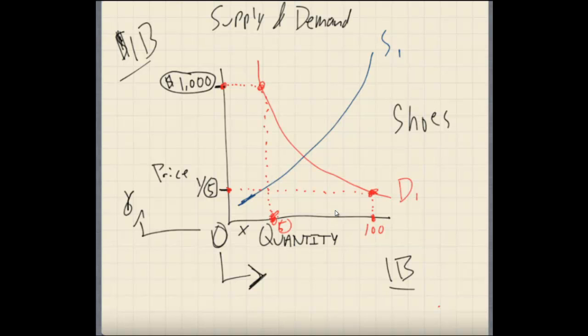Now, there's some exceptions we're going to talk about later, but as a rule of thumb, the law of demand is that the higher the price, the lower that the buyers, the higher the price, the less the buyers will want to buy.